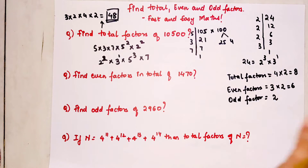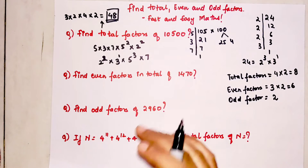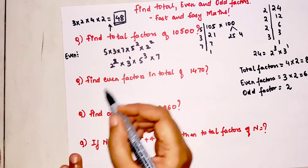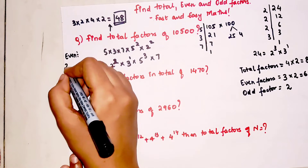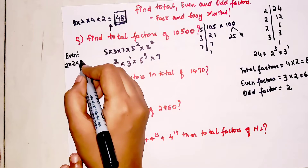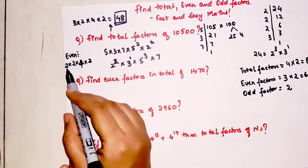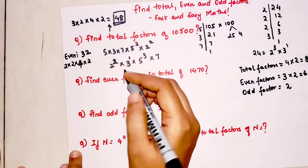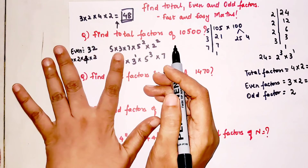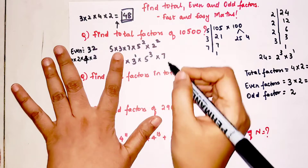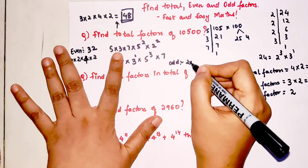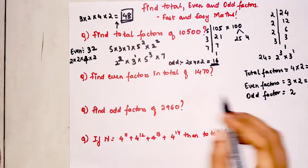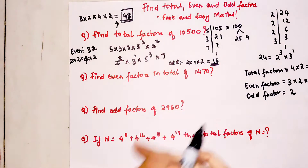If you're liking the explanation, please hit the like button — it gives me tremendous encouragement. Now for even factors of 10500: keep the index of 2 as it is, and raise all odd prime indices by 1: 2 × (1+1) × (3+1) × (1+1) = 2 × 2 × 4 × 2 = 32 even factors. For odd factors, ignore the 2 entirely and raise all odd prime indices by 1: 2 × 4 × 2 = 16 odd factors.